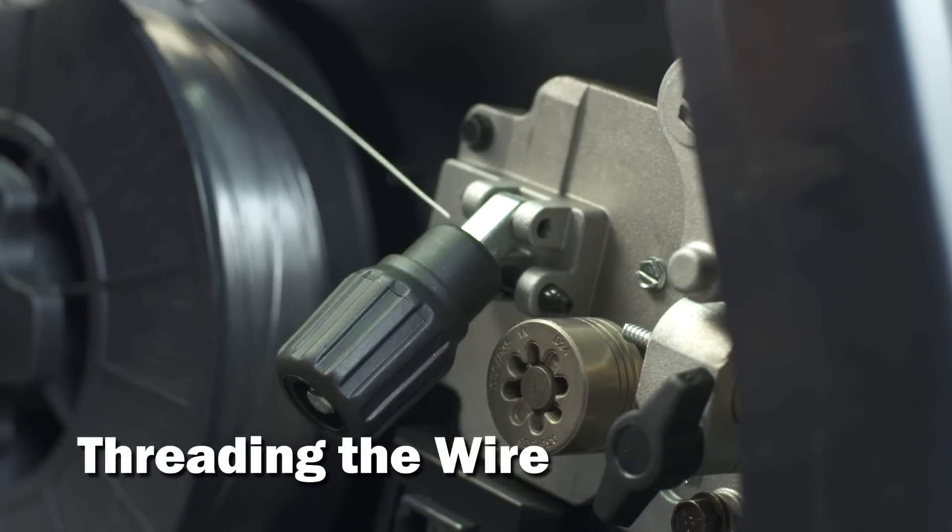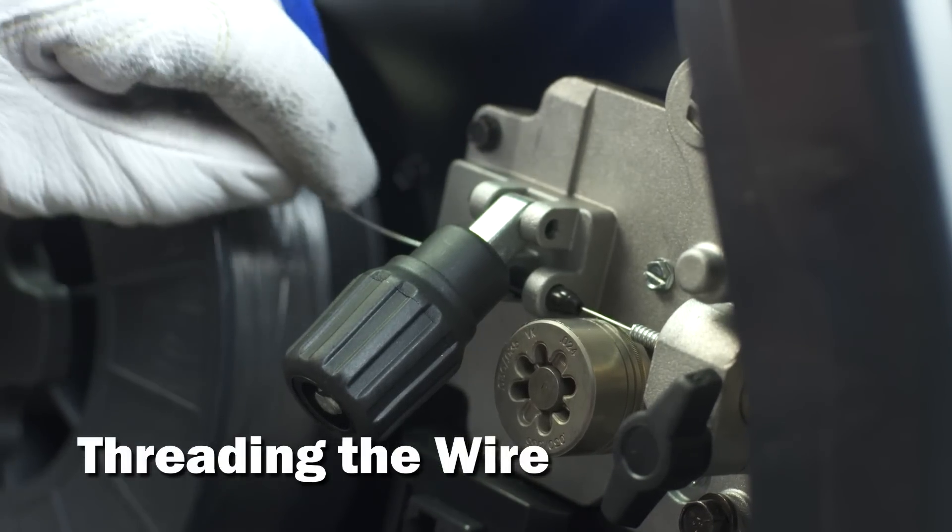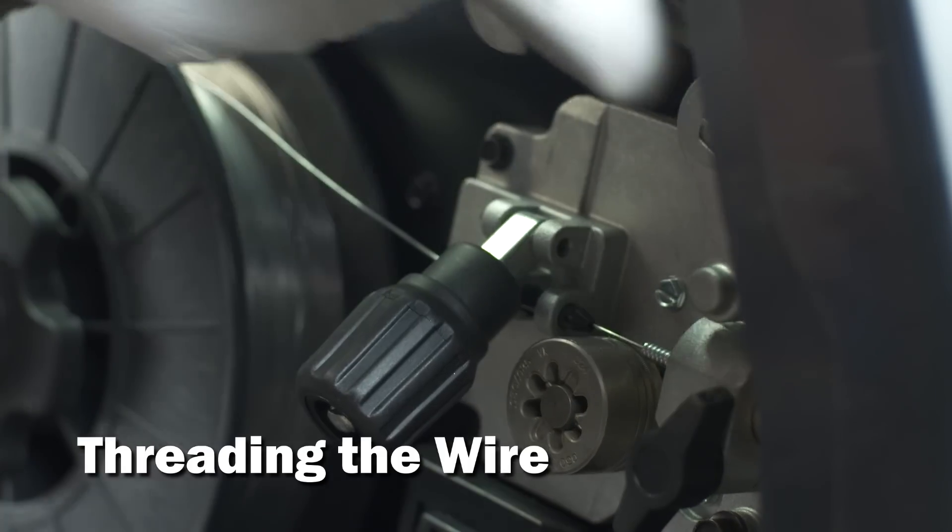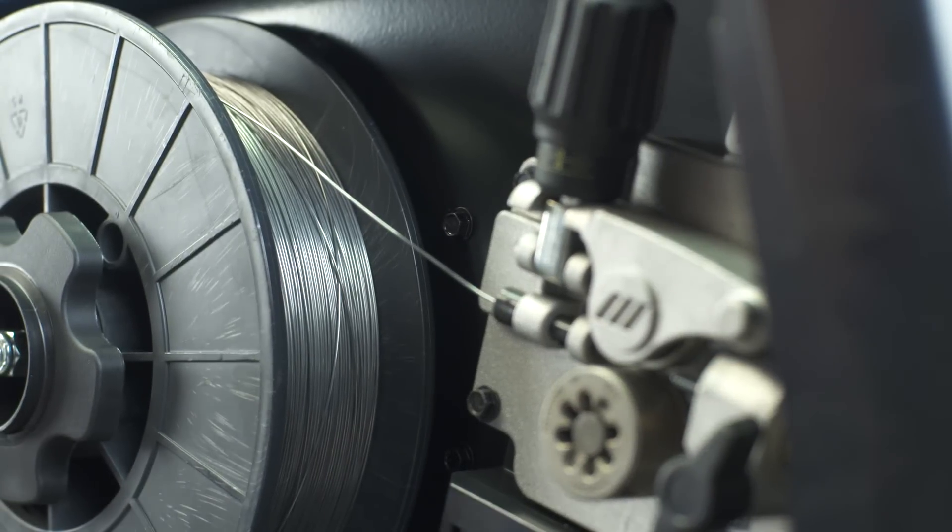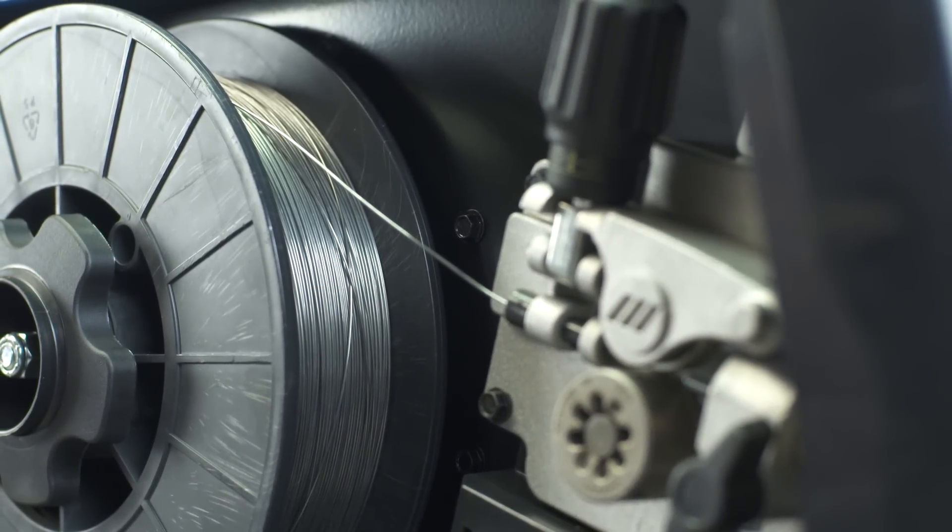Next, install the spool of wire and feed it through the inlet guide in the wire case. And close the pressure lever. Note, the Multimatic 215 is designed to feed wire from the top of the spool of wire.